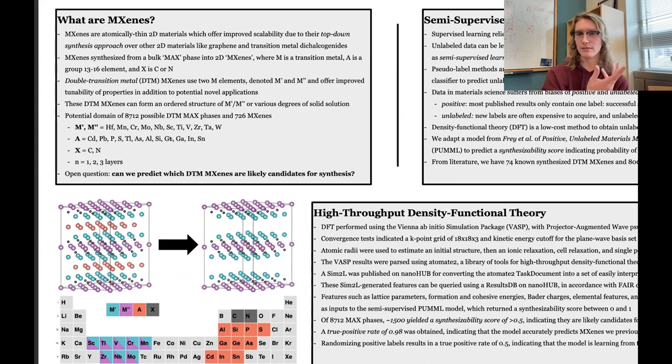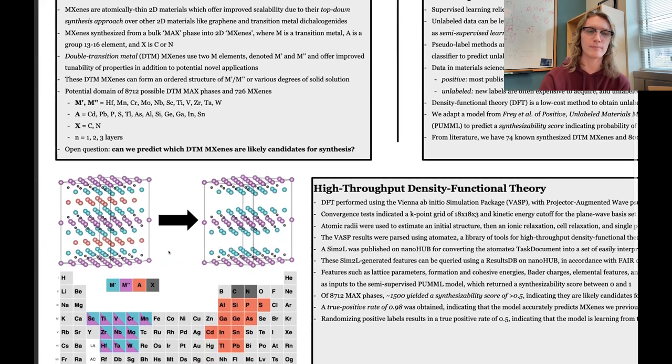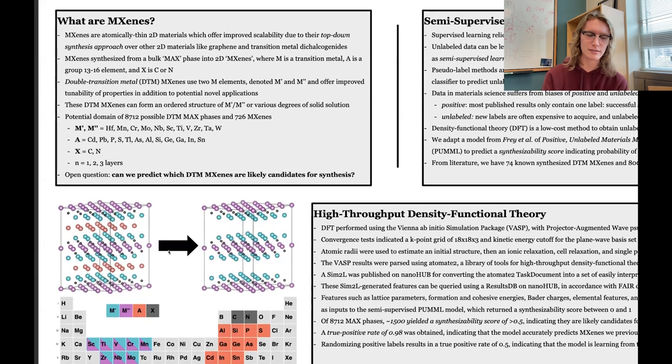From that bulk phase, you can chemically exfoliate to derive the 2D material due to weaker bonds between certain atom types. Within this family of MXenes, there is a large domain of possible combinations. We can have different types of atoms on each of these specific sites.